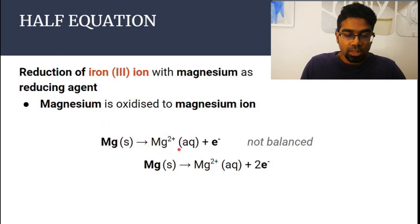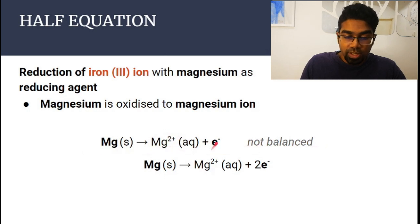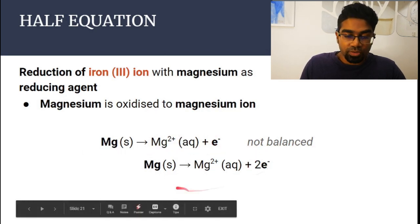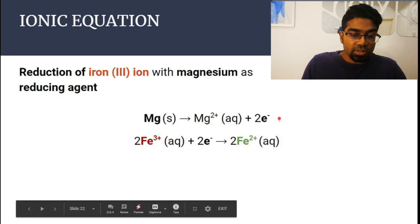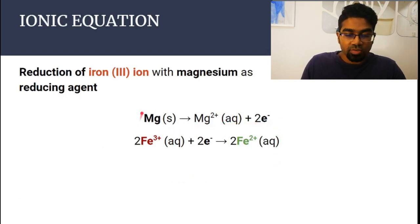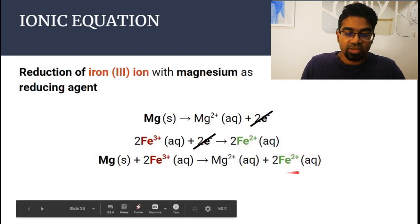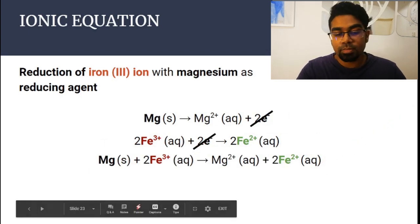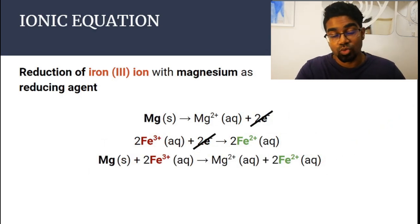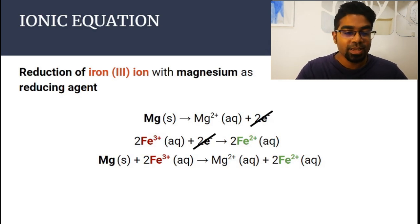Magnesium can also act as a reducing agent. Mg is oxidized to Mg²⁺. Although the number of atoms is balanced, the charge is not — we have two plus on the right and neutral on the left. So we add two electrons to the right to make it neutral. Now the number of atoms and charge are balanced, giving us the half equation for oxidation of magnesium. Combined with the iron-3 half equation and cancelling electrons, we get the full ionic equation. Instead of magnesium, anything more reactive than iron can be used — for example zinc — anything higher than iron in the electrochemical series (ECS).